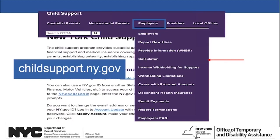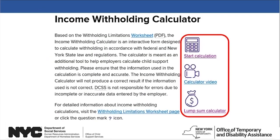Click on the Employer tab at the top of the page, then select Calculator. You can also find answers to common employer questions by clicking on the Employer tab and selecting Employer FAQs. To use the Income Withholding Calculator to determine the amount to withhold from the employee's paycheck, click on Start Calculation or the picture of the calculator.